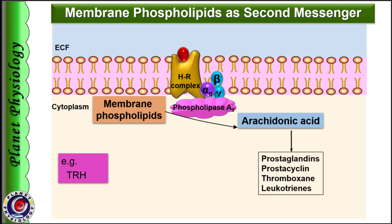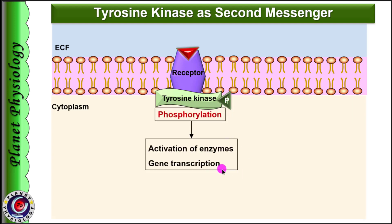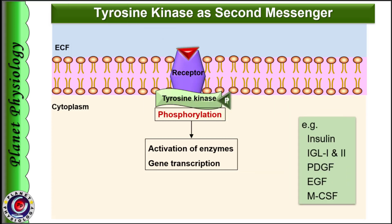Till now we have seen that hormone-receptor complex acts through G protein. But some peptide hormones do not require G protein for signal transduction. In such cases hormone receptors themselves have intrinsic tyrosine kinase activity. Formation of hormone-receptor complex leads to autophosphorylation of tyrosine residues within the receptors as well as cytoplasmic proteins, which in turn leads to phosphorylation of proteins. This activates enzymes or may induce genetic transcription and translation. Hormones acting via this mode are insulin, insulin-like growth factor 1, insulin-like growth factor 2, and other growth factors like platelet-derived growth factor, endothelial growth factor, and monocyte colony stimulating factor.